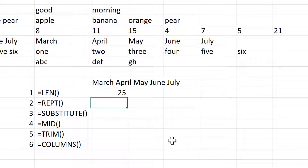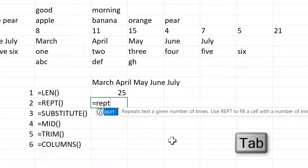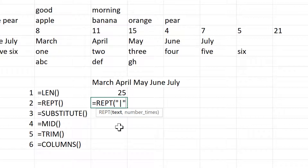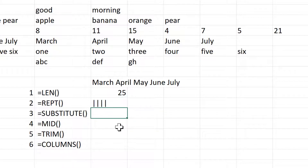Then the REPT formula will repeat a piece of text. You need to put this text inside quotation marks. So I will repeat a pipe symbol and then repeat it a certain number of times. So if I put four in here, it will repeat the pipe symbol four times.